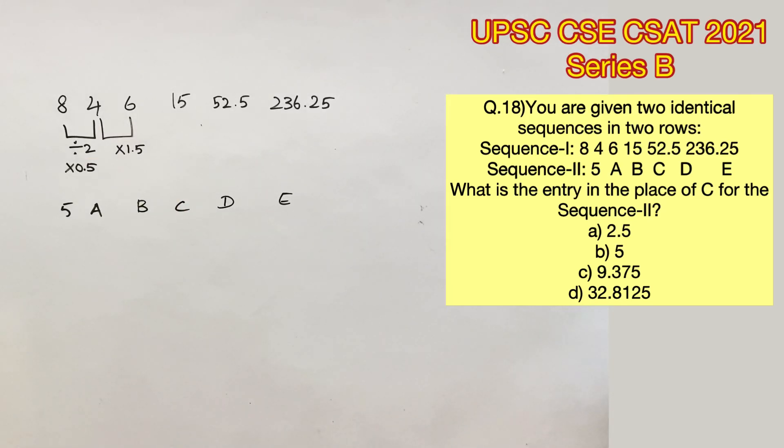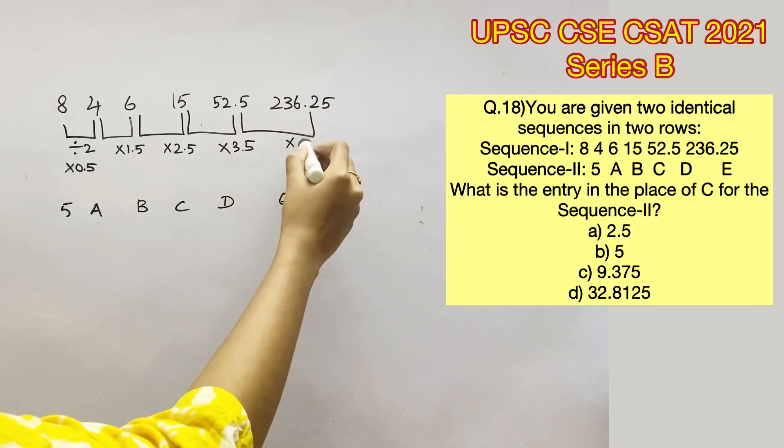Now we can easily decode the pattern in the first sequence because the first term was multiplied by 0.5. The second term is being multiplied by 1.5. So the third term will be multiplied by 2.5, fourth term by 3.5, fifth term by 4.5 and so on.